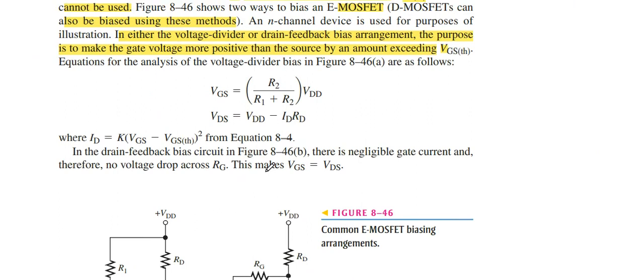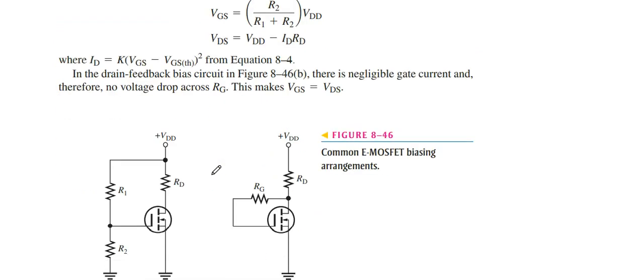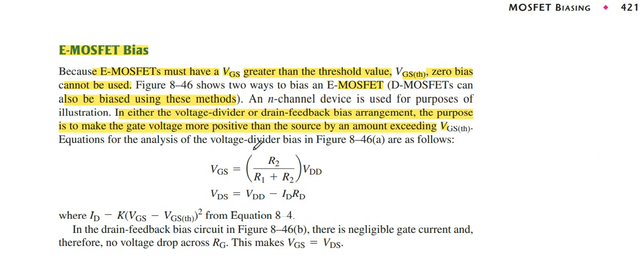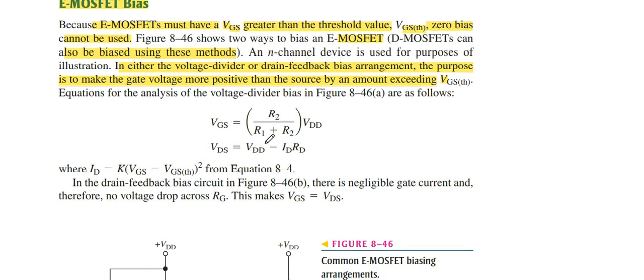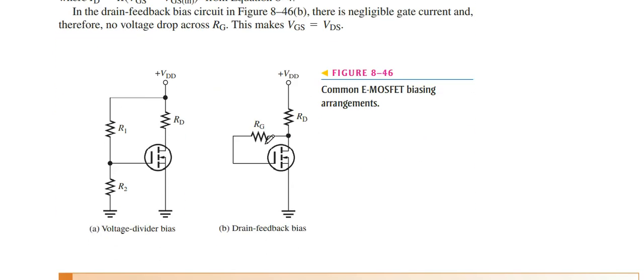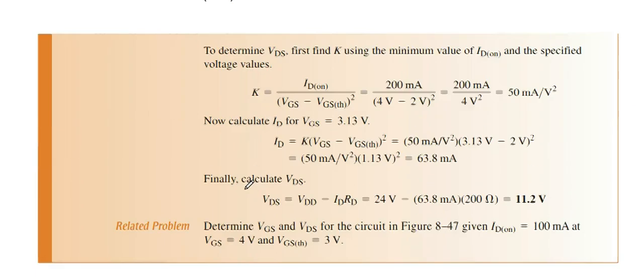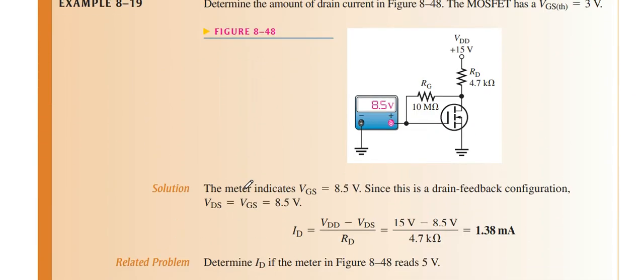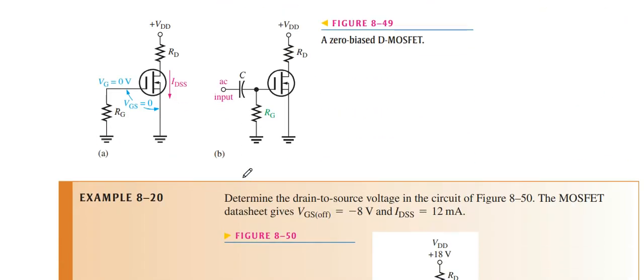Now we can operate E MOSFET by using potential divider. It is the same as we discussed in amplifier, transistor amplifier, collector meter amplifier, or further next chapters. There is no difference. Equations are also the same, not very difficult. You can read it by yourself.